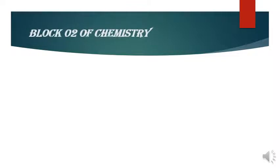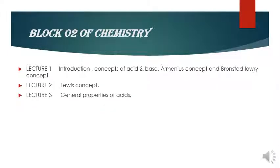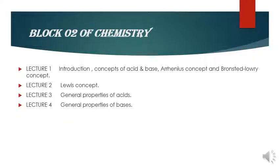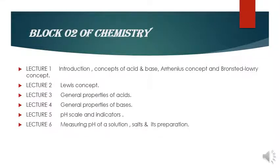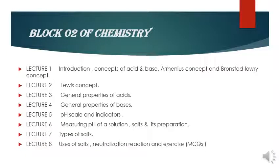As in block 2 of chemistry, in the previous week we had studied the introduction, concept of acid, base of Arrhenius, Bronsted, and Lowry concepts, then we studied general properties of acid. This week we are going to study general properties of bases, then we will discuss pH scale and indicators, measuring of pH, solution, salt and distribution. In next week we will study types of salt, uses of salt, neutralization reaction, exercises, and short and long questions.